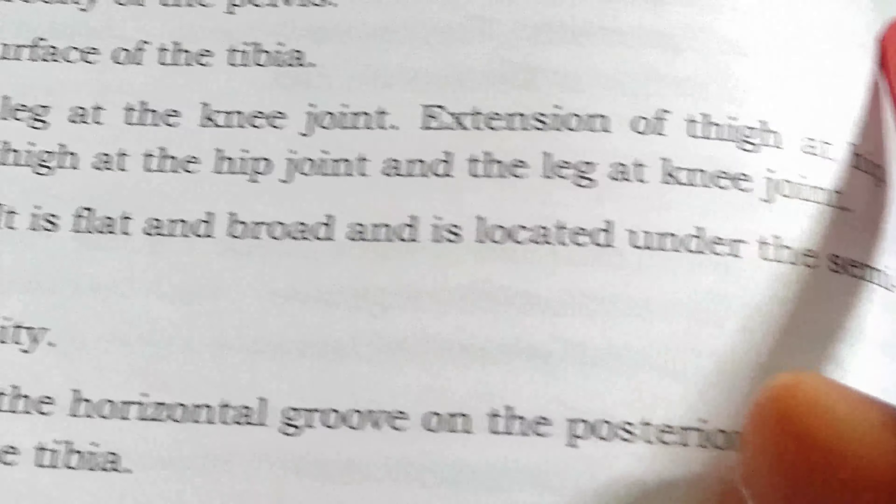Benefits of exercise on the muscular system. First: it increases strength, endurance, and power. Regular exercise leads to muscle hypertrophy — hypertrophy is an increase in muscle mass, the process by which muscle mass is gradually increased. Gains in muscular strength, endurance, and power usually depend on the size of individual muscle fibers. More muscle mass means more strength.